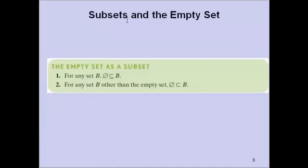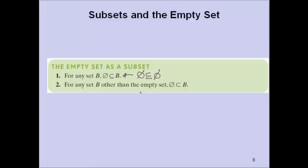Subsets and the empty set. For any set B, the empty set is a subset of B. Because of the equal-to bar, B could actually be the empty set itself — the empty set is a subset of the empty set. For any set B other than the empty set, the empty set is a proper subset of B. We exclude the empty set from the proper subset case because we're excluding equivalence. Always remember: the empty set is part of every subset.